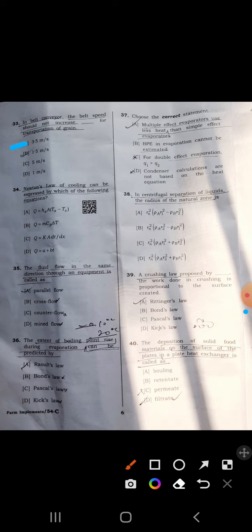I don't know thirty-eighth. Thirty-ninth: Rittinger's law proposed that work done in crushing is proportional to surface area created by Rittinger's law.